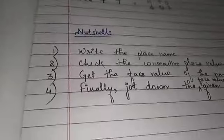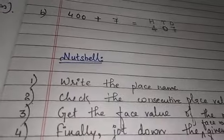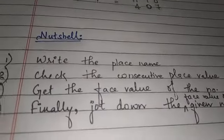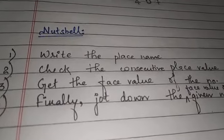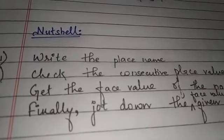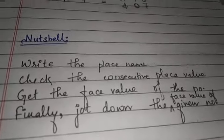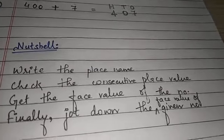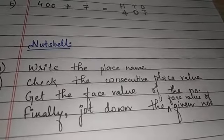Finally, the short form of a number, remember in a nutshell. Very first thing, write down the place name. Place name means hundreds, tens, and ones. Check the consecutive place value.